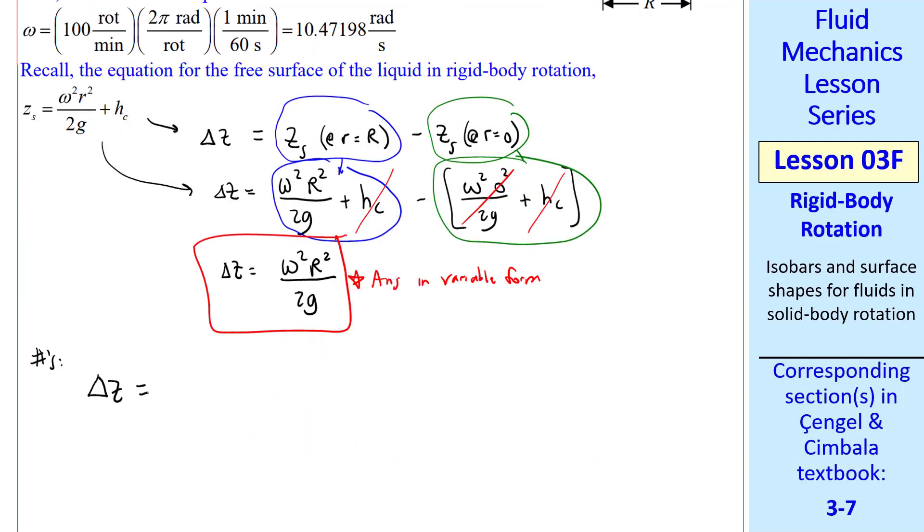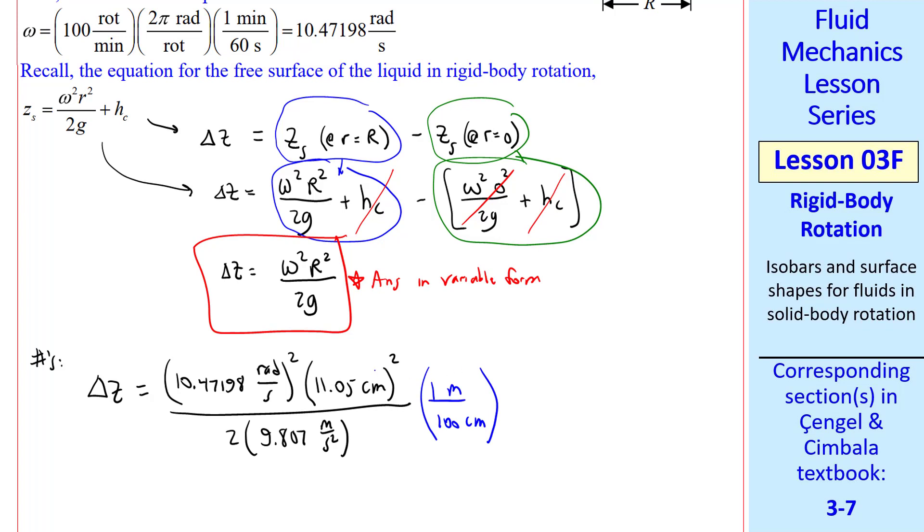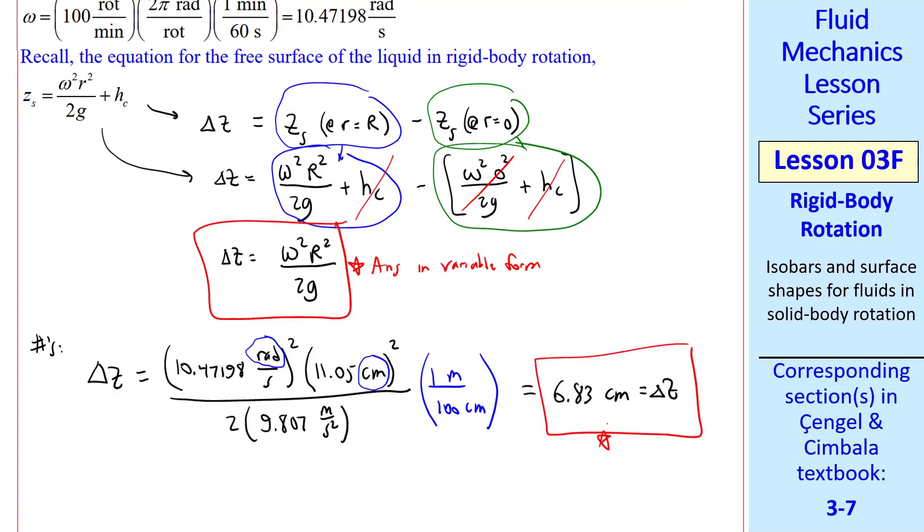We plug in the numbers and get delta z equal omega squared times capital R squared over 2 times g, and 1 unity conversion factor. I don't square this since we want our answer in centimeters. Radian has no units or dimensions, so the only thing left here is centimeters. And our answer is 6.83 centimeters.